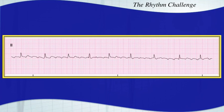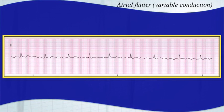Here's your next arrhythmia. This one should look vaguely familiar. It is atrial flutter with a variable conduction — variable conduction because your R-to-R interval here is much different from this one. So this is atrial flutter with variable conduction. That is a sawtooth pattern for the atrial activity.